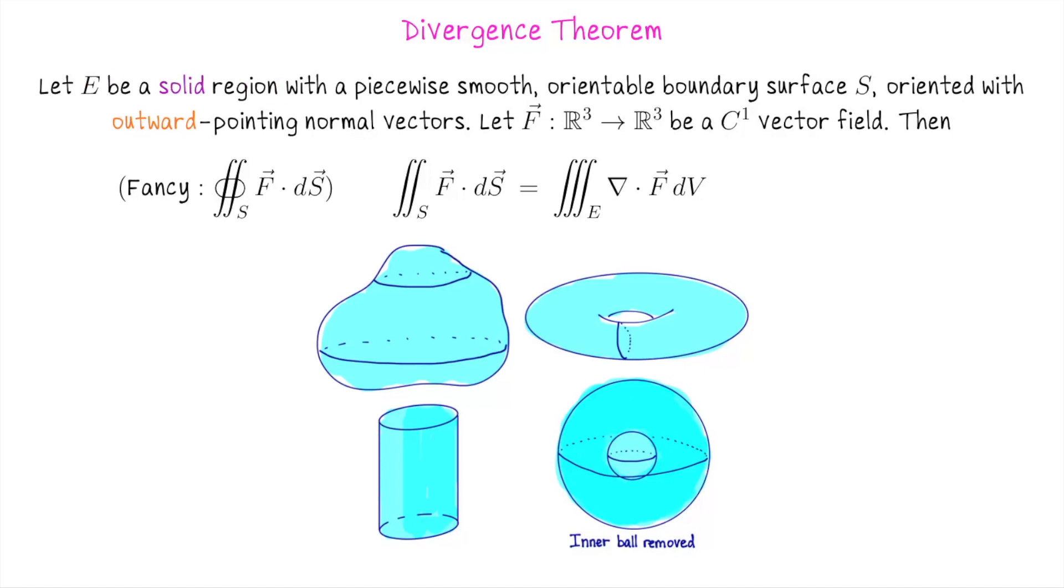Here the domain and dimensions are different than what we saw for Green's Theorem and Stokes Theorem. E is a solid region, so if we were looking at this picture, it looks kind of like a rock. It's not just the edge, it's also the interior. So it's a solid three-dimensional blob. You can travel through it. S is the edge, the boundary enclosing E.